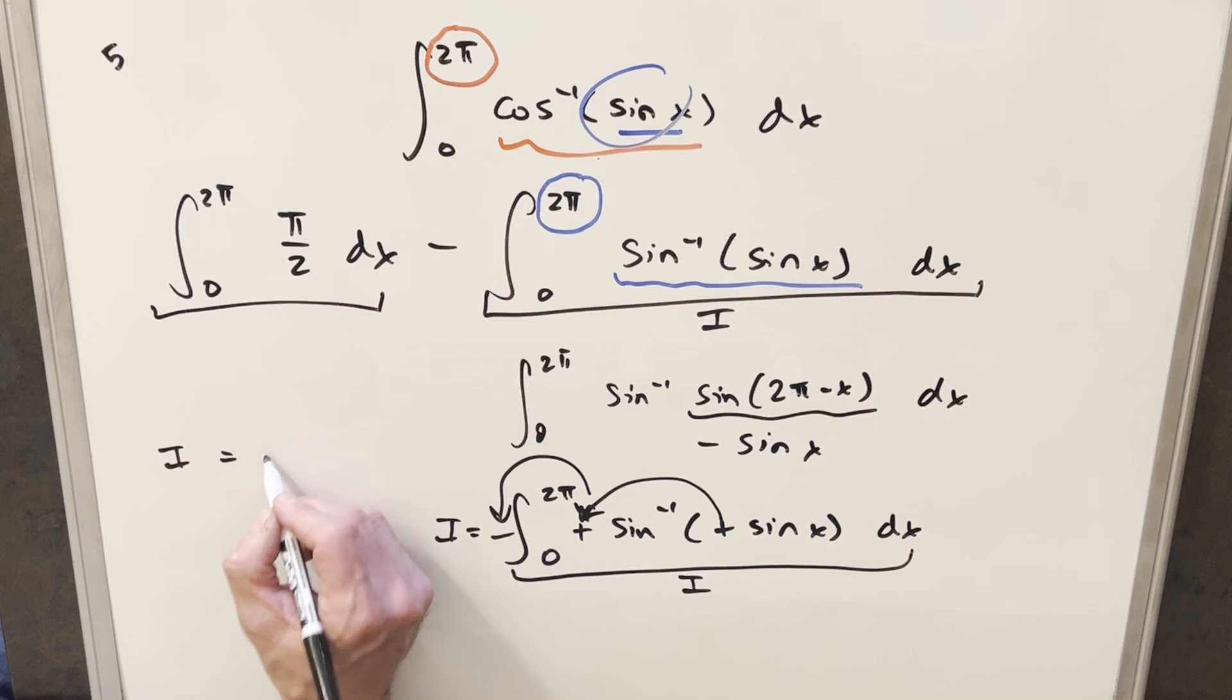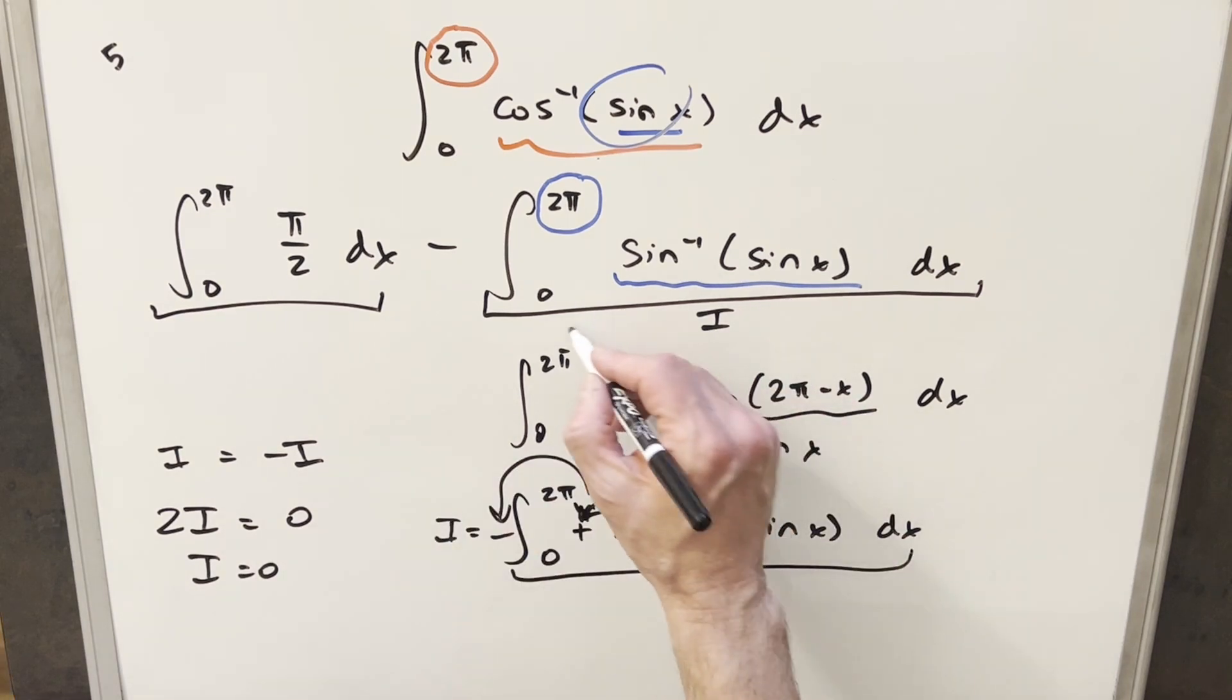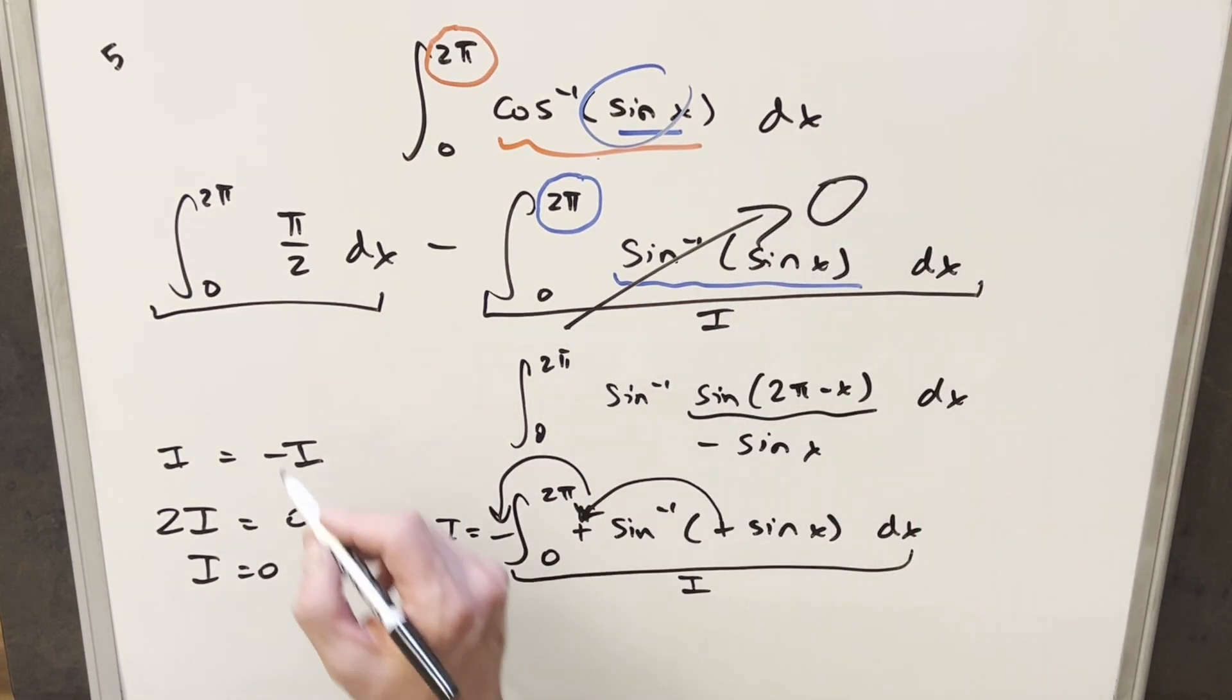Then what we found is just that i equals minus i. I can add an i on both sides. 2i equals 0 or i just equals 0. But if this here is 0, then this whole piece of the integral goes away. And we can just focus on this easy integral right here.